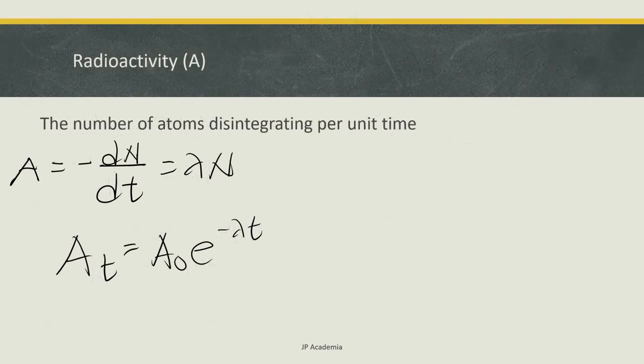The radioactivity A of a source is generally defined as the number of atoms disintegrating per unit time. Thus, we can express this negative dN over dt as your A, which is your activity. Therefore, we will have this form. A(t), your activity as a function of time, is equal to the initial activity A0 times this exponential decay e to the negative lambda, your decay constant, times t.